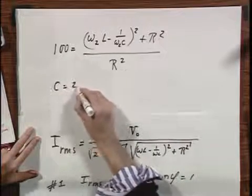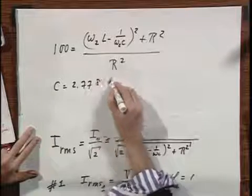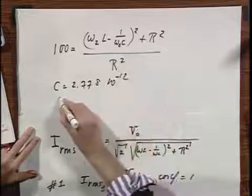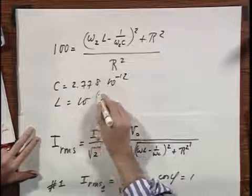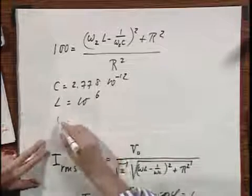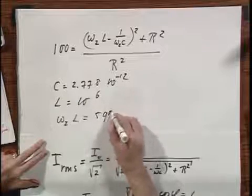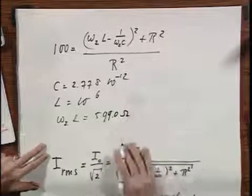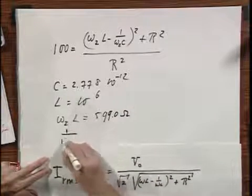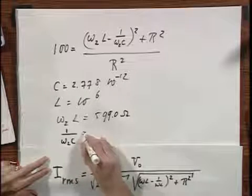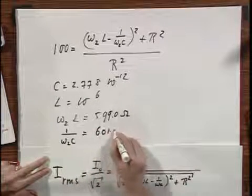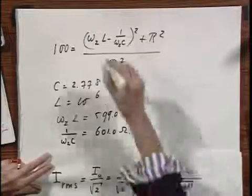Now C was 2.778 times 10 to the minus 12, L was 10 to the minus 6. And so that gives me omega 2 L equals 599.0 ohm. And it gives me 1 over omega 2 C equals 601.0 ohm. So this here is 2.